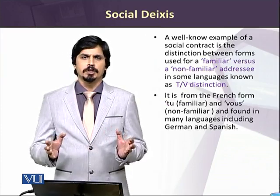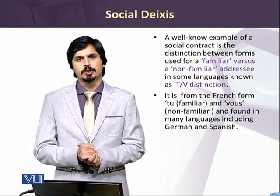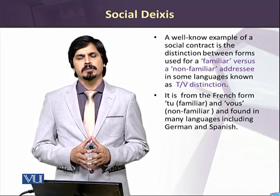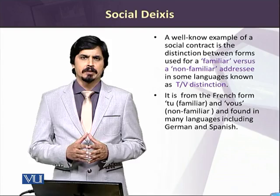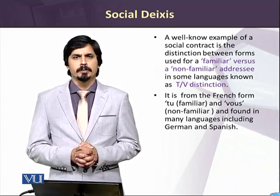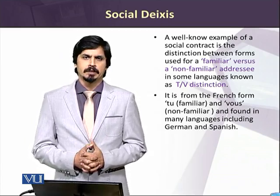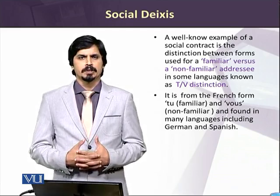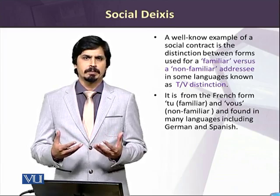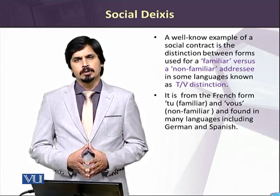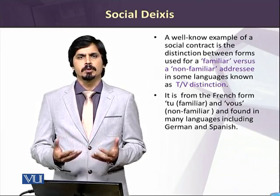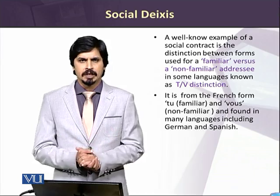Another well-known distinction within social deixis is between familiar and non-familiar expressions. This academic distinction is found in French literature, which comes to us in the form of the T-V expression. 'Tu' is the form used for familiarity, and 'vous' is used for non-familiarity. We usually use the 'tu' form when we are in a better position and talking to people who are lower to us in age or in status, and we use 'vous' when we are talking to somebody who is superior to us in knowledge, wealth, status, or any other way.